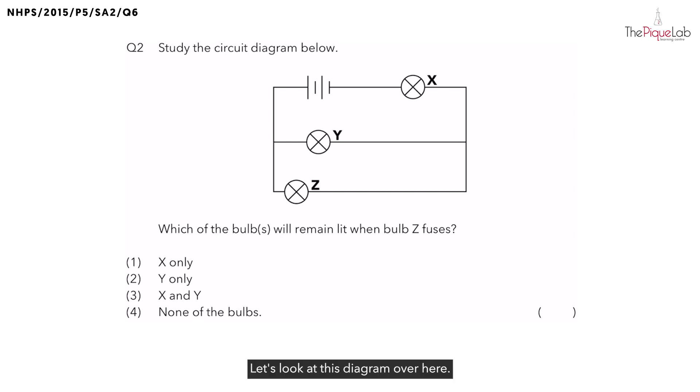Let's look at this diagram over here. Where does electric current come from? We say that the batteries produce electric current, so we should start tracing from the batteries over here.